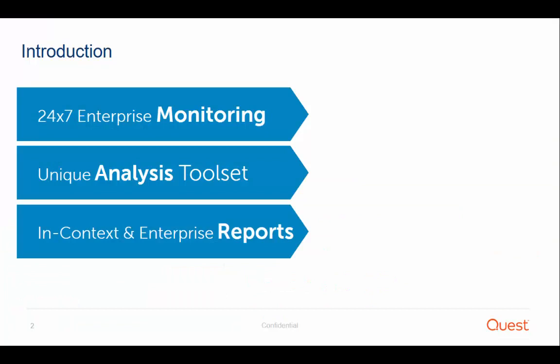Foglight for SQL Server is a 24x7 enterprise monitoring solution which allows you to effectively monitor your databases, featuring deep resource monitoring capabilities with a powerful analysis toolset to enable fast problem resolution and proactively fix issues before they become a real problem.